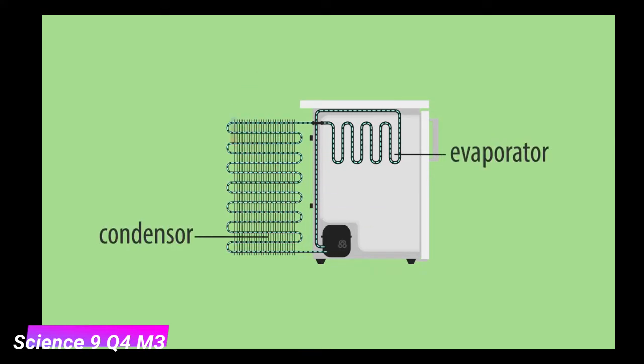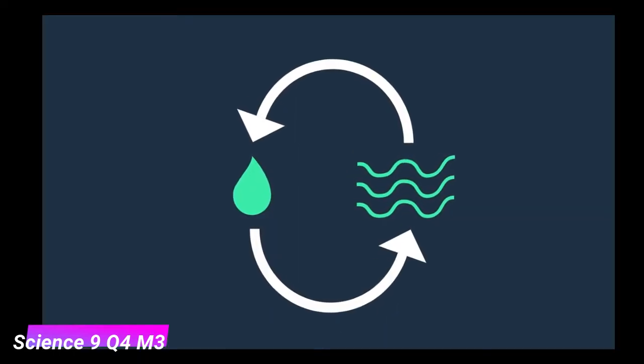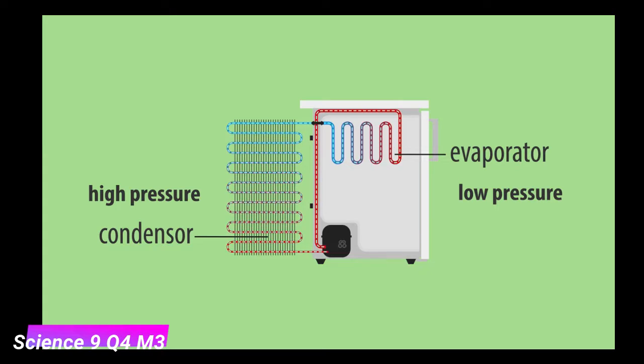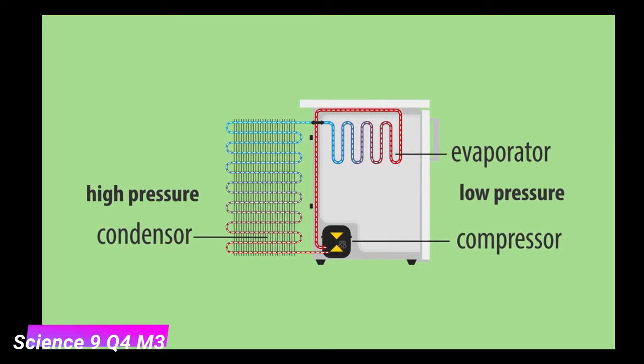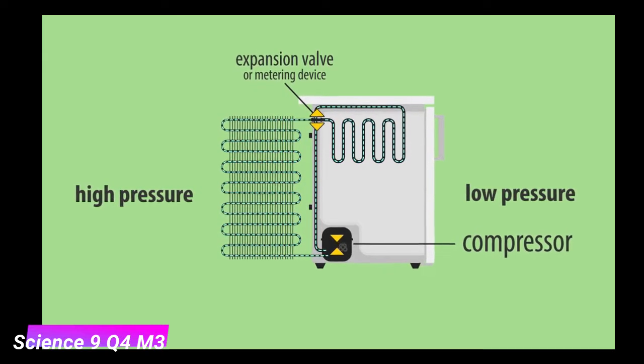Because of a difference in temperature and pressures, the coolant keeps transitioning between a liquid and gas and back again. These pressures are managed by a compressor, usually at the bottom of the fridge, and an expansion valve or metering device.